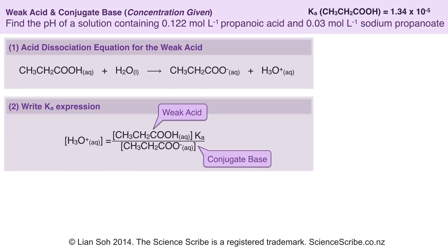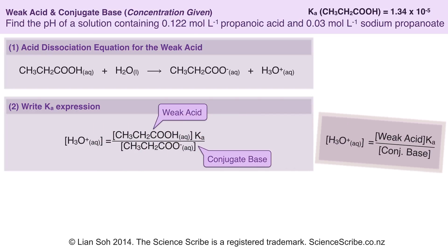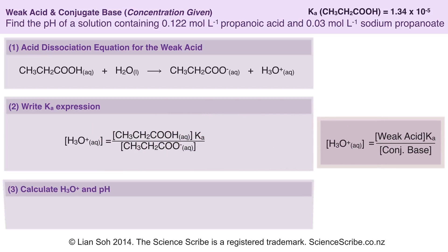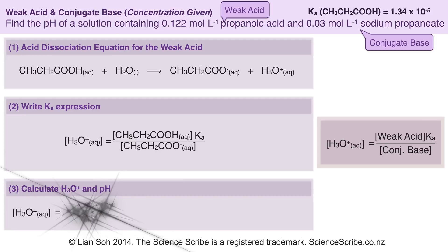Notice that the top of the expression is weak acid and the bottom is conjugate base, because I'm going to use this to derive a formula which I'll use in the next question. Once we know the concentration of H₃O⁺, we can go ahead and calculate pH. I know my concentration of propanoic acid and conjugate base because that's already been given, so we substitute all these figures into our formula and do the arithmetic on the calculator to get a concentration of hydronium ions.